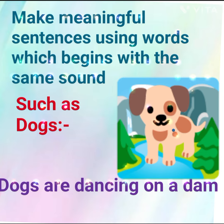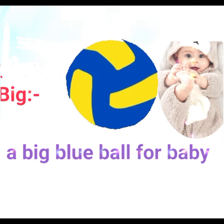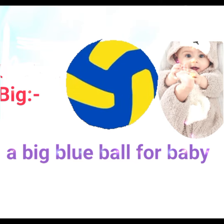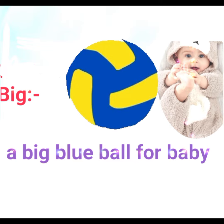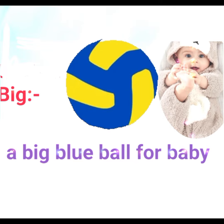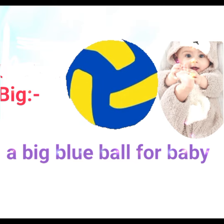Now make the sentence: 'Dogs are dancing on a damn.' Next word given is 'big,' so use the words which sound like B — big, blue, ball, baby.